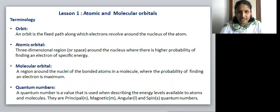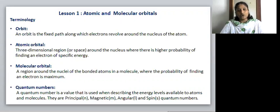Yes guys, you have written right. Orbit is a fixed path along which electrons revolve around the nucleus of the atom. What is Atomic Orbital? It is a three-dimensional region around the nucleus where the probability of finding an electron is maximum. And what is Molecular Orbital? A region around the nuclei of the bonded atoms in a molecule where the probability of finding an electron is maximum.